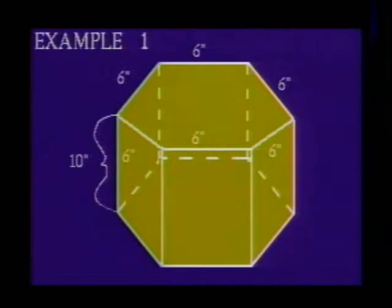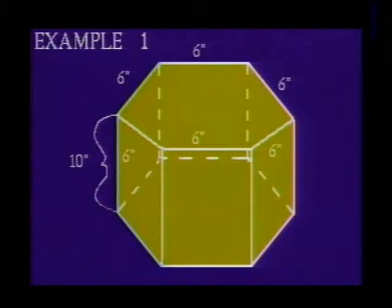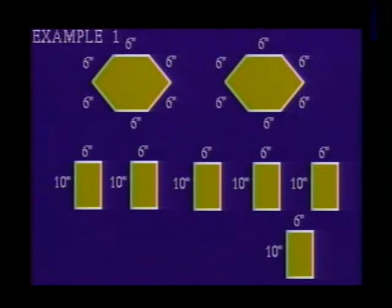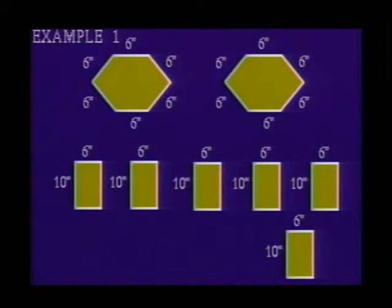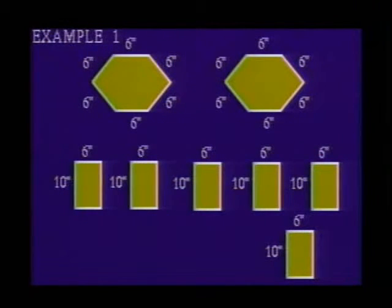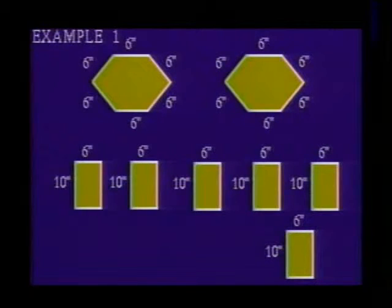Example 1: Find the total surface area of this right regular hexagonal prism. First, let's identify the shapes of the faces of this solid and then calculate the area of each. We see that each base is a regular hexagon, six inches on each side. The formula used to find the area of a regular polygon is A₁ = ½ times the product of the perimeter and the apothem.